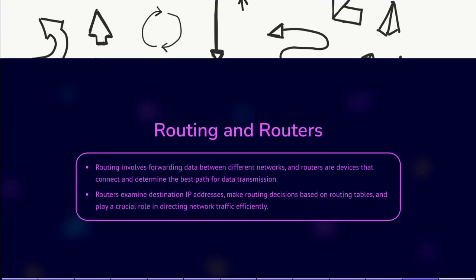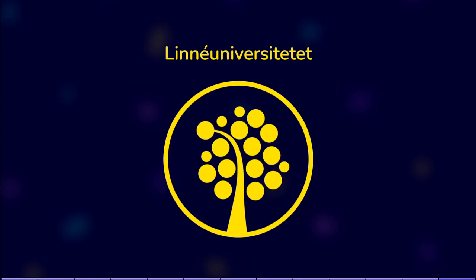Routing and Routers. Routing involves the process of forwarding data between different networks. Routers are devices that connect multiple networks and determine the best path for data transmission. They examine destination IP addresses, making routing decisions based on routing tables, and forward packets accordingly. Routers play a crucial role in directing network traffic efficiently. Thank you for listening. The slides for this presentation are available for download so you can read them if you need to. Until next time.